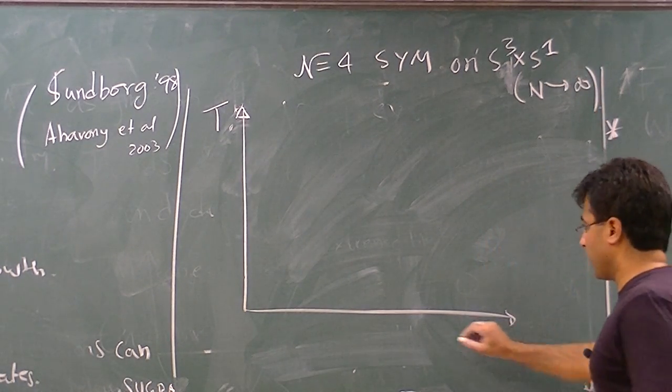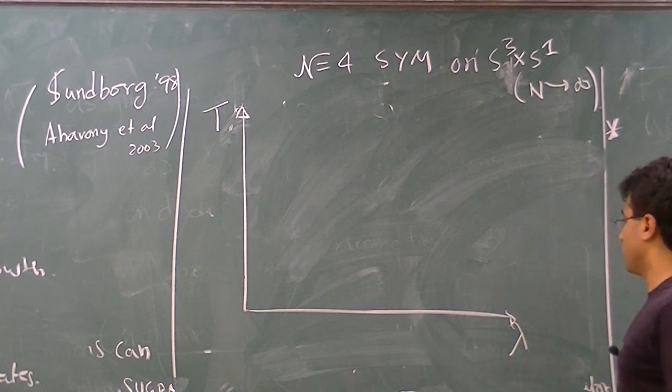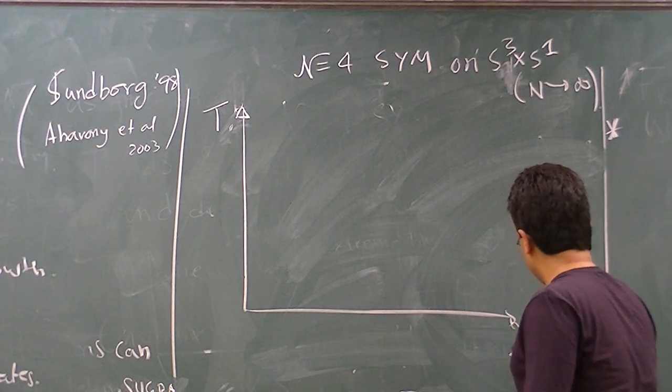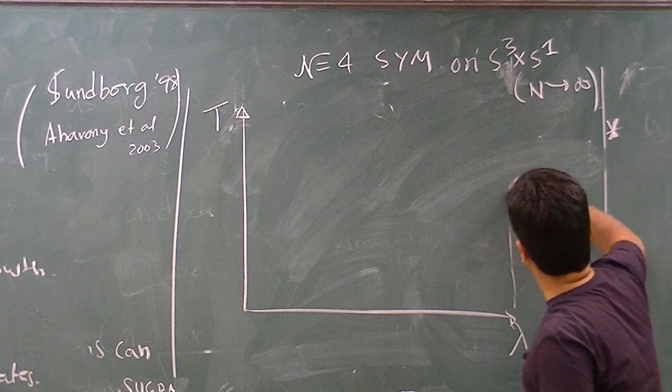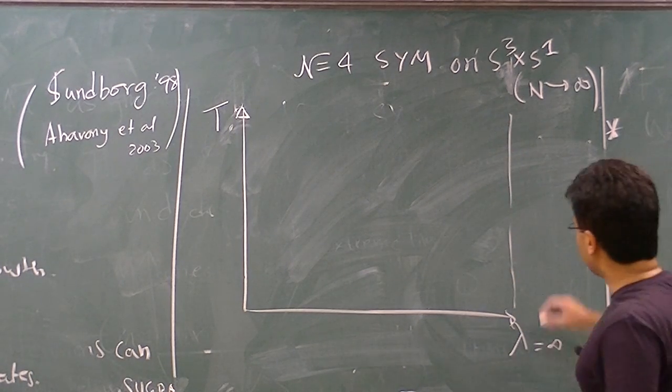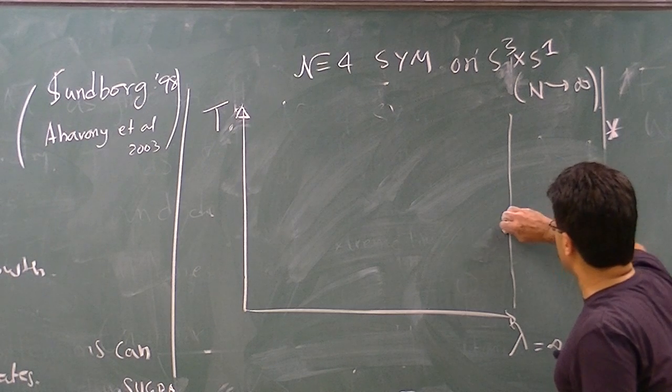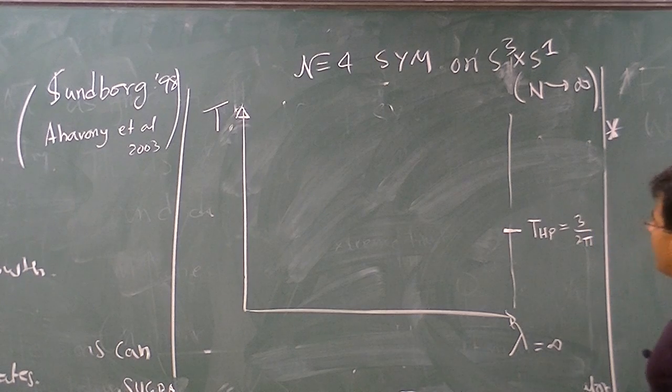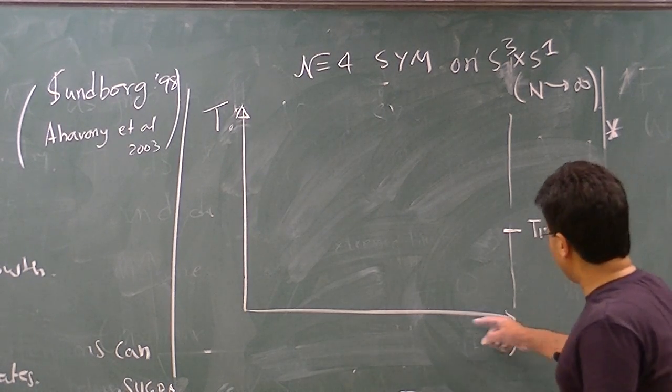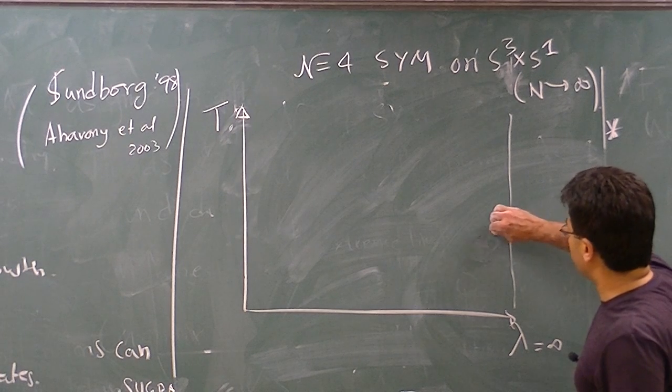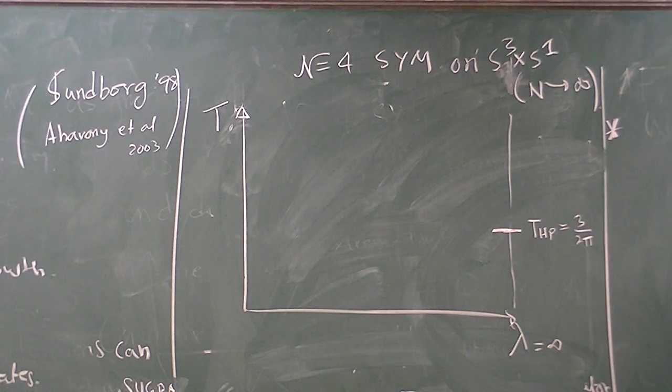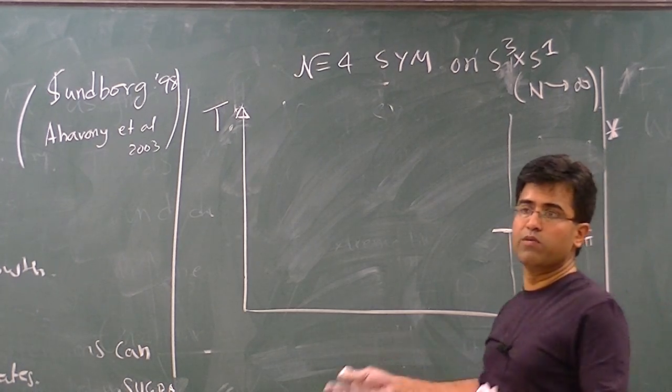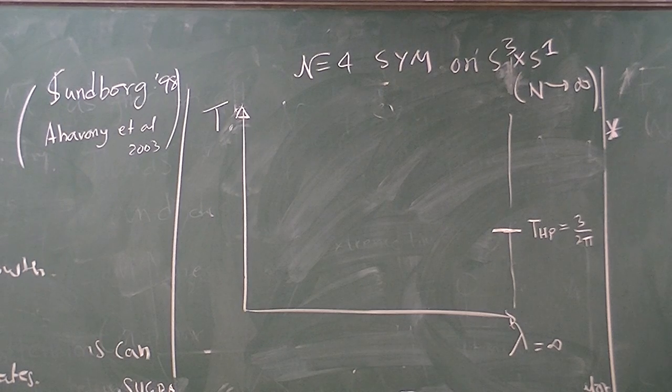And on this axis I'm actually going to draw the 't Hooft coupling. What we know is that when lambda is infinite, so this is the line of lambda equals infinity, and at lambda equals infinity, there's a temperature which is the Hawking-Page temperature, given by 3 over 2 pi, at which there is a first order transition. Away from lambda equals infinity, we expect this Hawking-Page transition to continue to be first order. There's no reason to expect that anything will change drastically. The big black hole will remain, will get some corrections, but will not suddenly get a new saddle point.